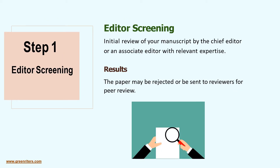Step 1: Editor Screening. The authors submit the manuscript to a journal, usually through an online submission system, and the journal editor receives it. The manuscript will first go through an initial screening by the editor, who will decide if it is suitable for the journal and whether there are any fundamental flaws. If the editor thinks there are serious problems or it is irrelevant to the scope and goal of the journal, the manuscript will be rejected without external review and the authors will be notified. If it passes the initial screening, it is sent out to external reviewers.